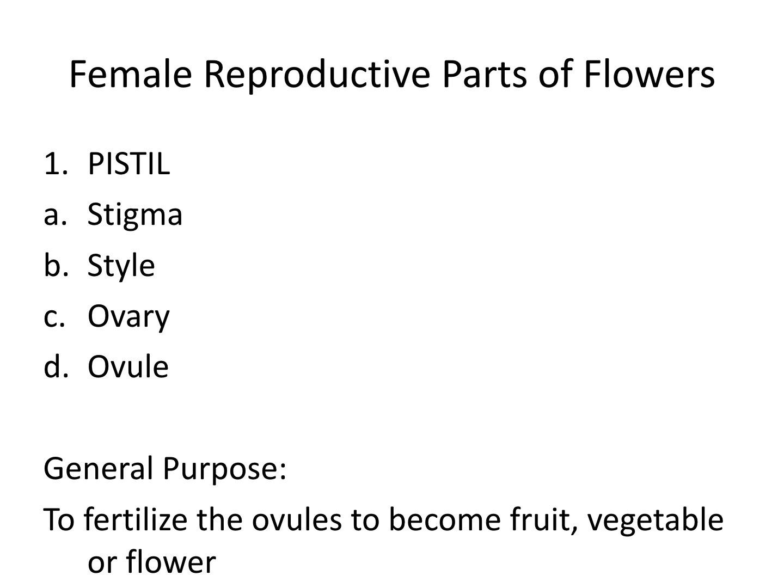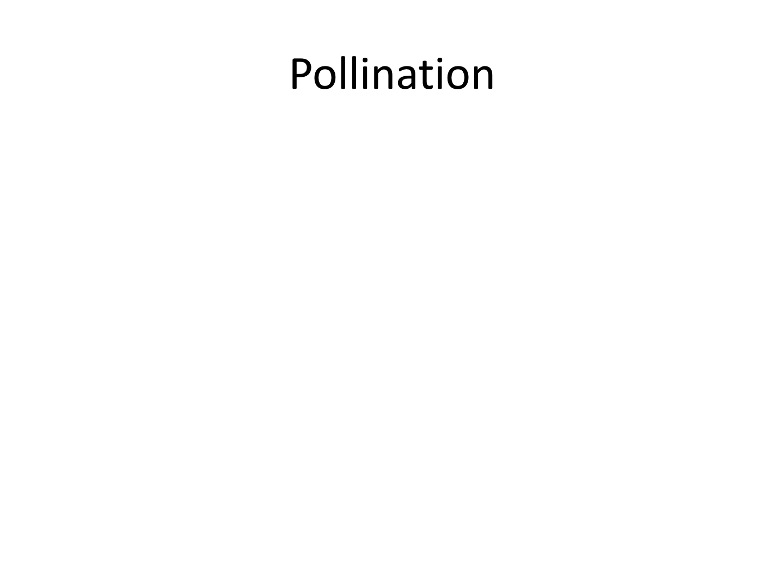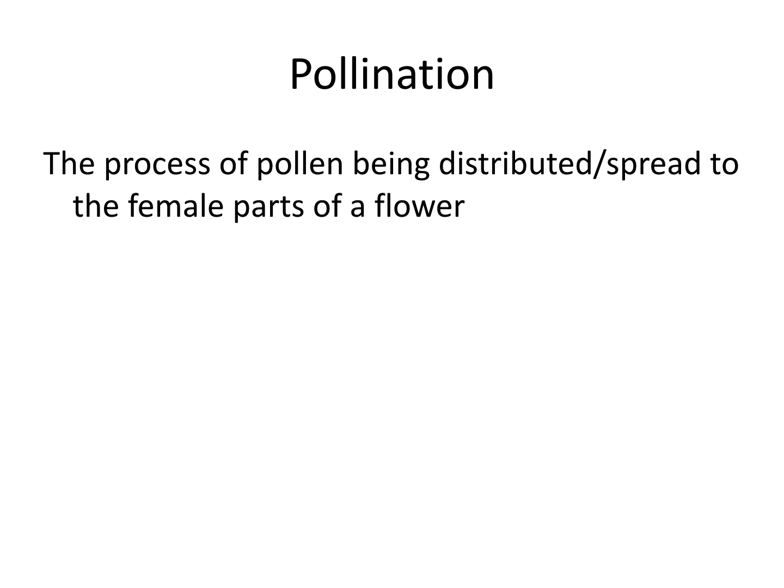You need to know the male parts and what they do, the female parts and what they do, their general purposes or functions, and then we also have a few processes. This unit will be all about understanding vocab words. The first vocab word is pollination — you've heard of it before, those awesome bees that like to fly around. Pollination is the process of pollen being distributed or spread to the female parts of the flower. Pollinators like bumblebees, honeybees, butterflies, bats, wind, or water are all doing the process of pollination.